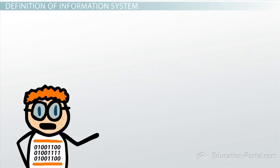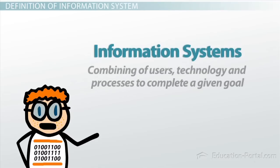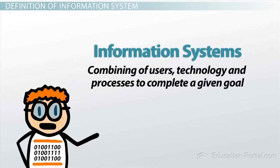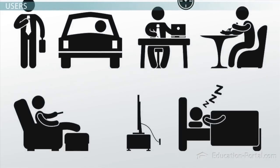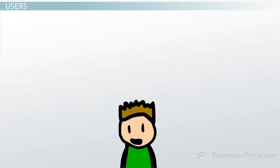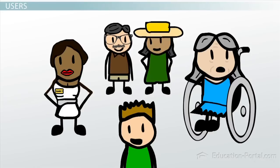Our formal definition of information systems is the combining of users, technology, and processes to complete a given goal. Think about your daily routine. It doesn't matter if you are a student, working adult, someone's parent, retired, or some combination of all of these — systems of technology impact you. For example, these videos are made with a broad variety of technological and human resources.